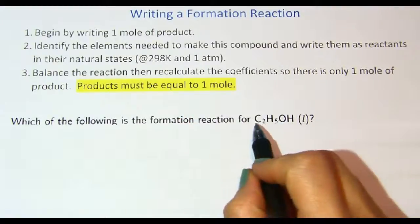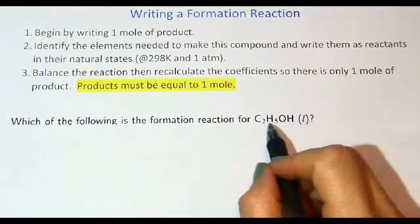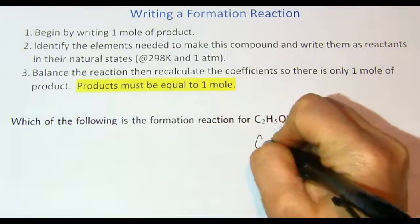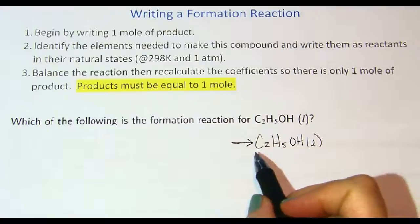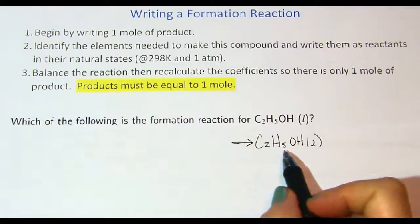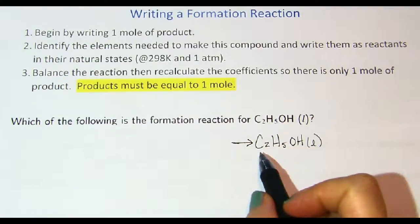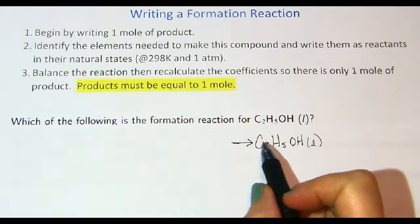To write the formation equation for C₂H₅OH, first write it as the product, then draw the yield sign. Each element that makes up this compound is placed on the reactant side in its standard state.